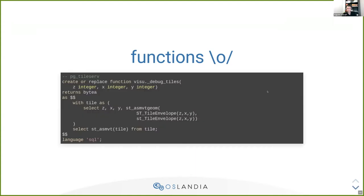Let's give an example. This is a function for PGTileServe. PGTileServe will pick up any function that has these parameters: Z, X, Y — which are the coordinates of the tile — and that returns bytea. The best way to do it is to use ST_AsMVT for this function. This simple example is a debug example I often use to benchmark how a client application behaves, how it switches from one Z level to another. Basically, I calculate the envelope of the tile and create a tile with it, embedding Z, X, Y as metadata. I think it's really interesting because there is no table or real data behind it — it's all generated data. It gives you a glimpse of what's possible with these functions.